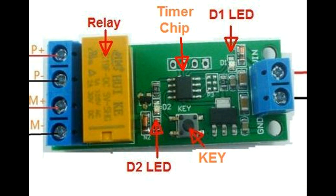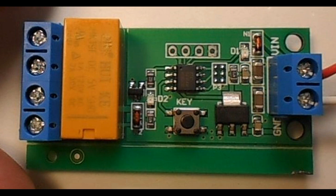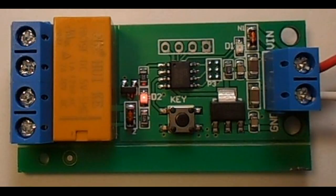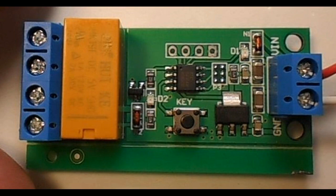In our case, the relay off time when D2 is not lit will represent the forward motion of the train plus the pause time. And the on time when D2 LED is lit will represent the reverse motion of the train and its pause time at the other end. How to program this timer chip will be explained shortly.